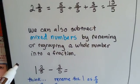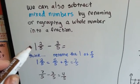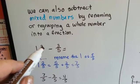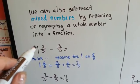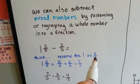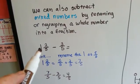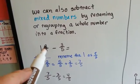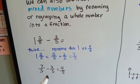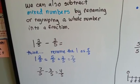We can also subtract mixed numbers by renaming or regrouping a whole number into a fraction. One and two fifths minus three fifths. You can't take three from two, so we've got to borrow it from this big one. The big one thing became a five fifths. Five fifths right here is the one whole one, and the two fifths is seven fifths. Now we can take the three fifths away. Seven fifths minus three fifths is four fifths.